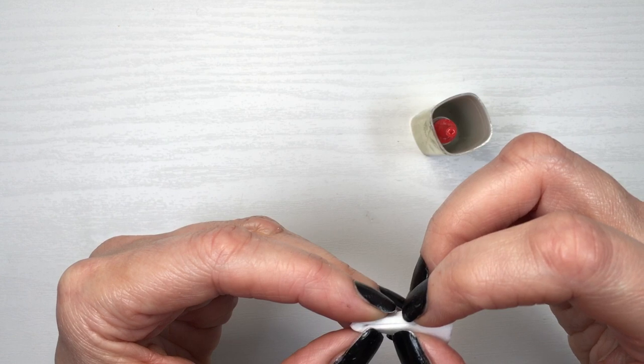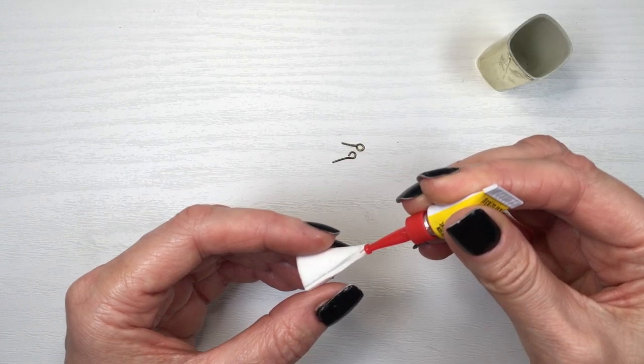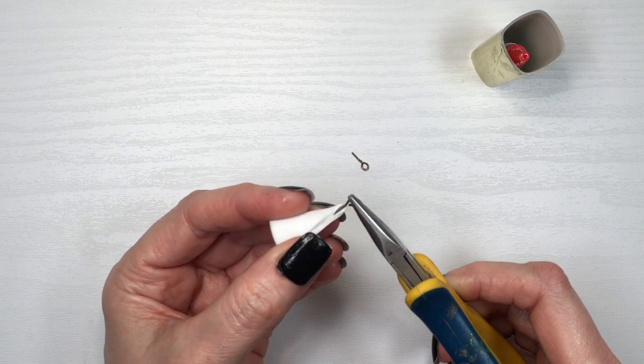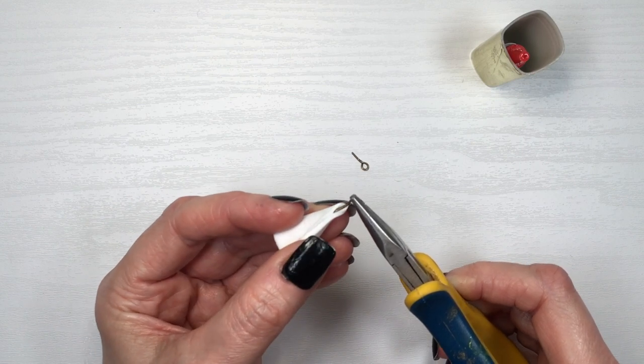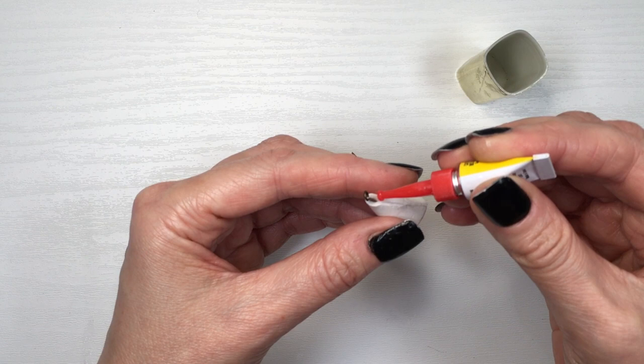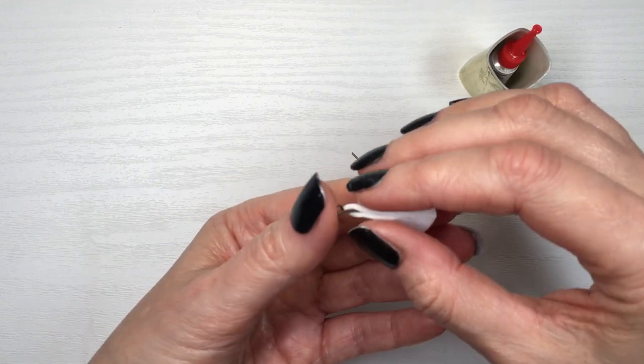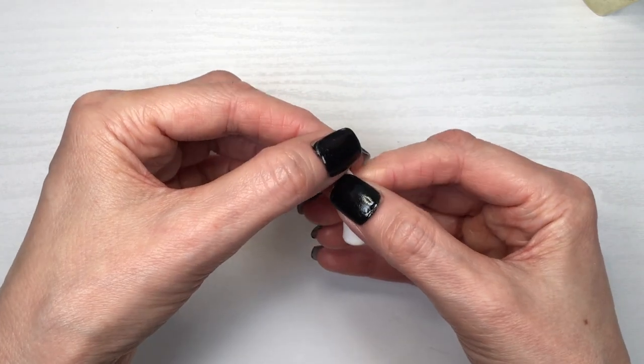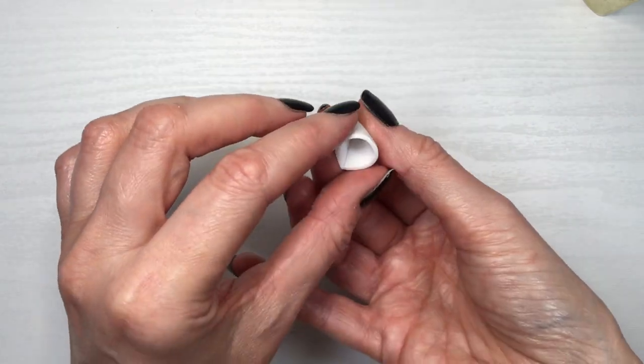Then I'm taking a copper eye pin—I do have a DIY to show you how to make eye pins if you just have wire. I'm gluing my eye pin and then closing my cone with my fingers, being really careful not to glue my fingers, and making sure that the loop of my eye pin is front facing so I can see it from the front.